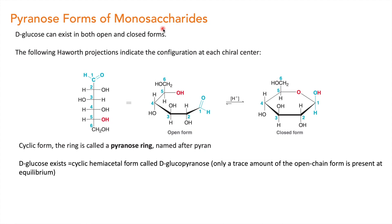We have seen that glucose and fructose are present in open chain form. Now we will study how the cyclic ring is formed in monosaccharides. D-glucose exists both in open chain form as well as in this cyclic form. This is the Haworth projection of D-glucose, and it indicates the configuration at each chiral center. D-glucose contains an aldehyde group at the first position. When this aldehyde group reacts with the fifth carbon hydroxyl group, it gives a cyclic structure. You can see the oxygen reacting on carbon 1 — oxygen has a negative charge and carbon 1 has a partial positive charge — and you get this closed form.